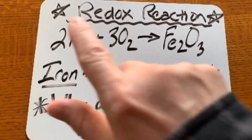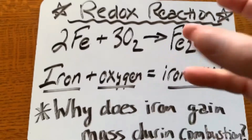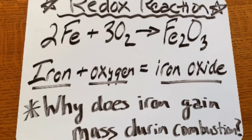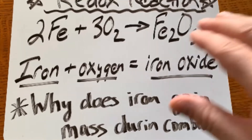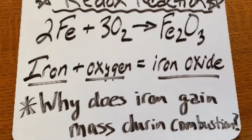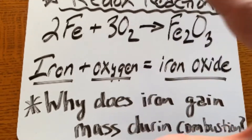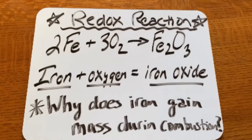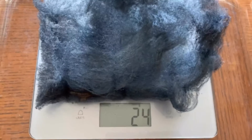So you're actually taking iron from the steel wool, and as it combusts, it's taking oxygen atoms right out of the atmosphere to make iron oxide, which we call rust. Iron oxide is a molecule — it's gaining mass because it's gaining oxygen atoms as it combusts into iron oxide. All the way up to 24 grams now, from 11 grams.